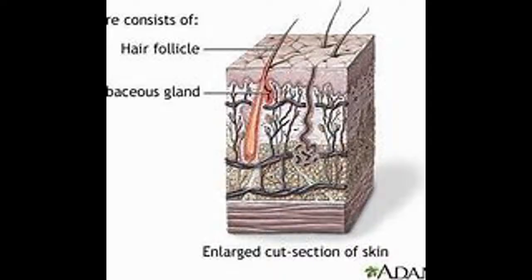The sebaceous glands produce sebum, which is a mixture of oils and waxes, which lubricates the skin and prevents loss of water. The sebaceous glands are most highly concentrated on the face and, to a lesser extent, on the back, chest, and shoulders.